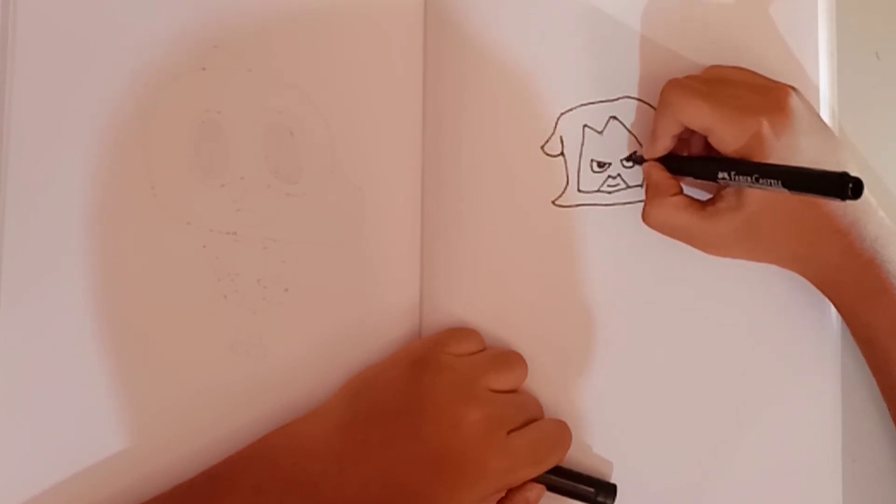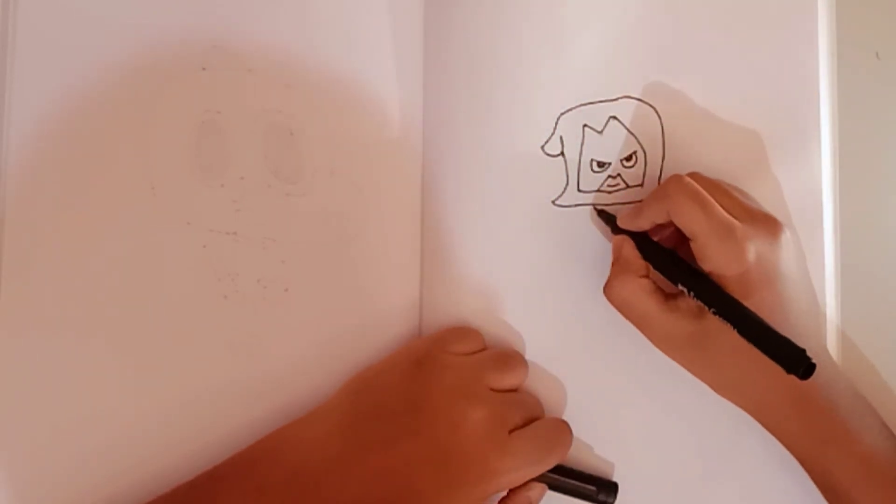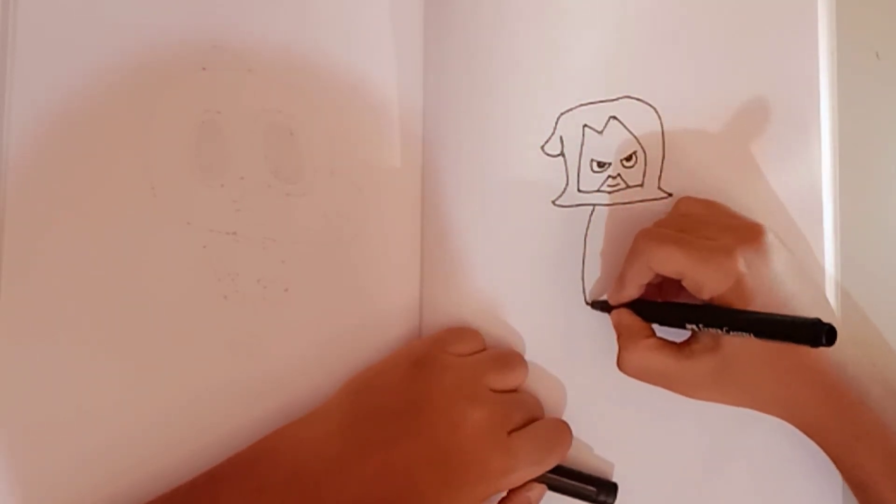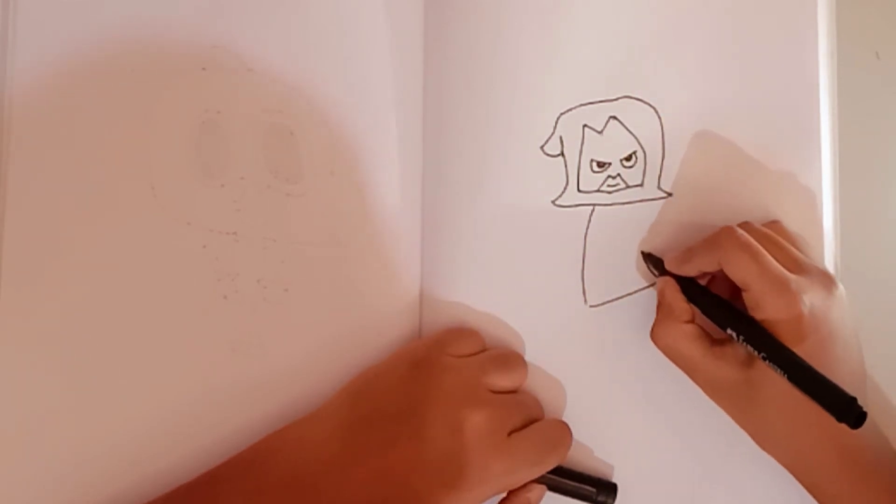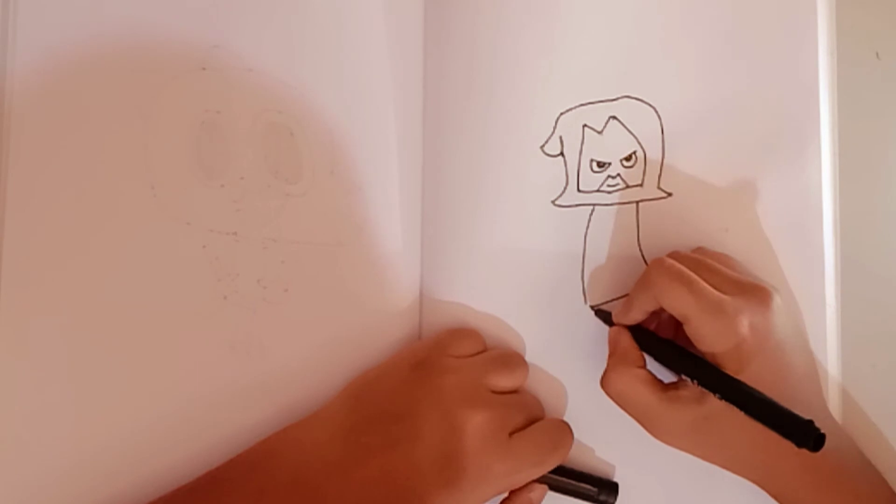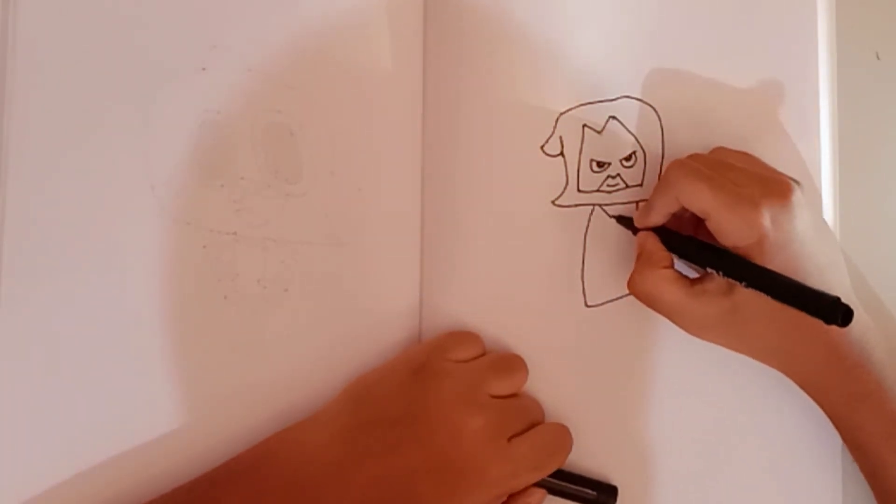We'll do the same on her left eye. Now we'll draw her body. A curve line like this and straight line like this and another curve line like that.